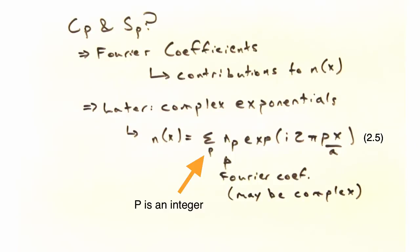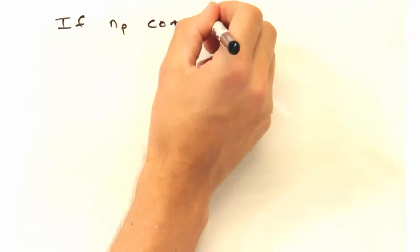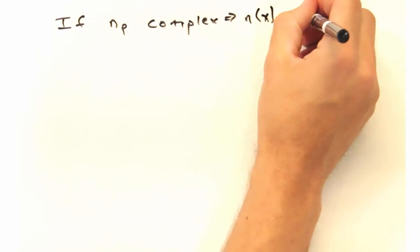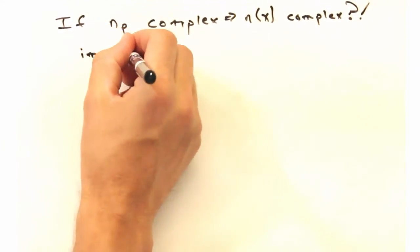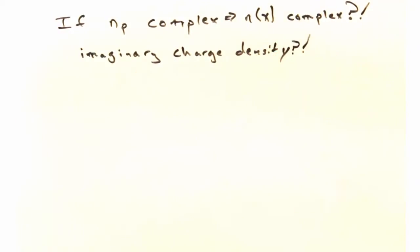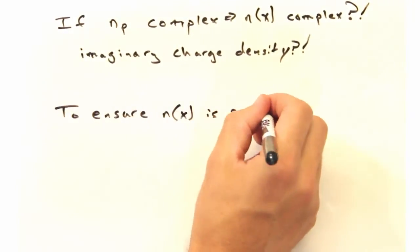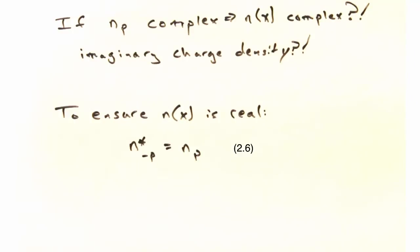No way, that doesn't seem right. If our coefficients can be complex, then there's a chance that our N of x could be, and an imaginary charge density doesn't really make sense. Yeah, you're right. And in order to ensure that N of x is real, we just need to put a constraint on our coefficients. Page 28 of Cattell, version 8, goes through and proves this, if any of you at home are curious.